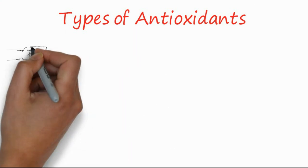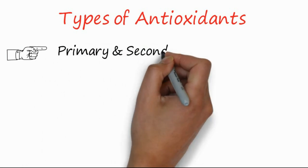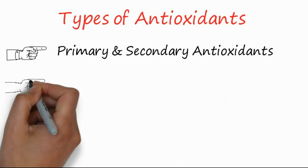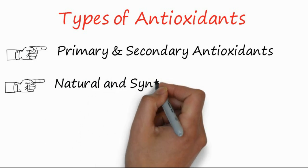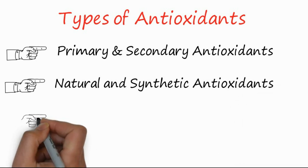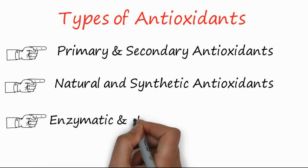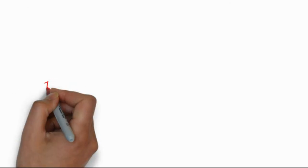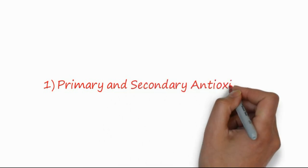Types of antioxidants: antioxidant types or classes can be categorized into different classes. The first classification is primary and secondary antioxidants. The second classification is natural and synthetic antioxidants. The third one is enzymatic and non-enzymatic antioxidants. These are the three known different types of classification systems for antioxidants.